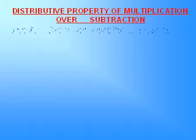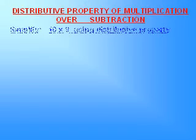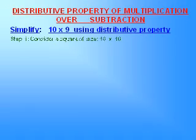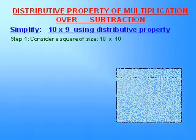We see the distributive property of multiplication over subtraction. For example, simplify 10 into 9 using distributive property. So first take a square of measures 10 and 10.